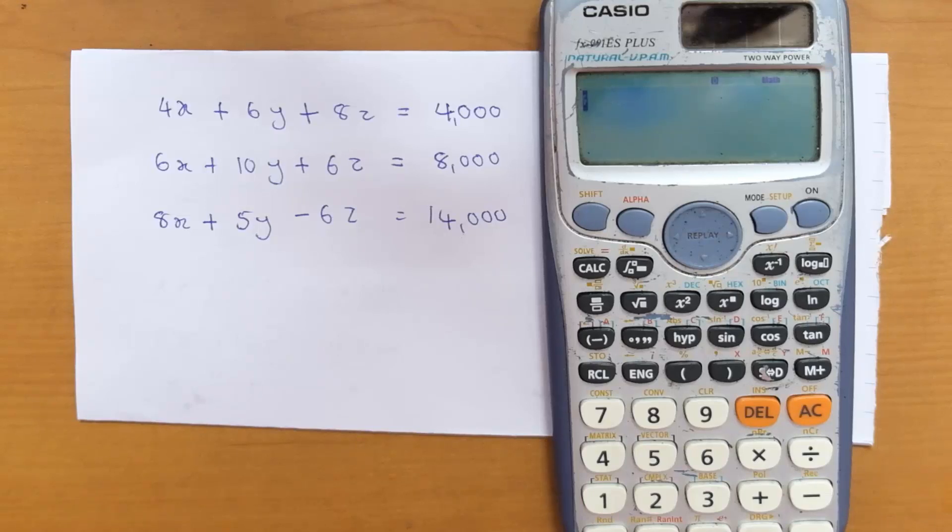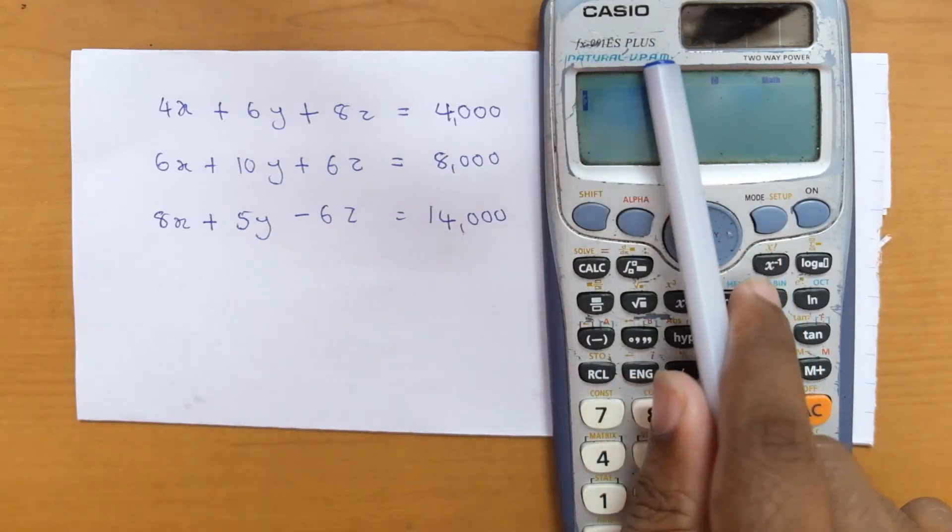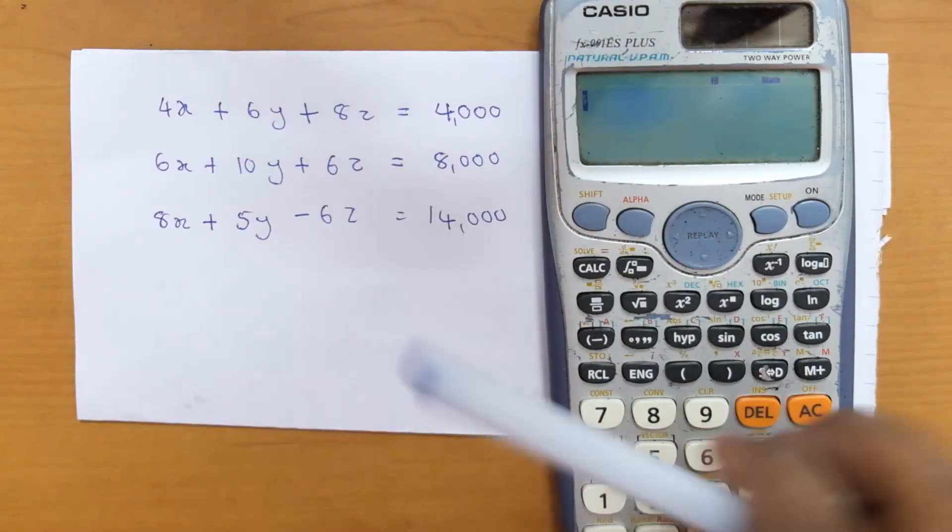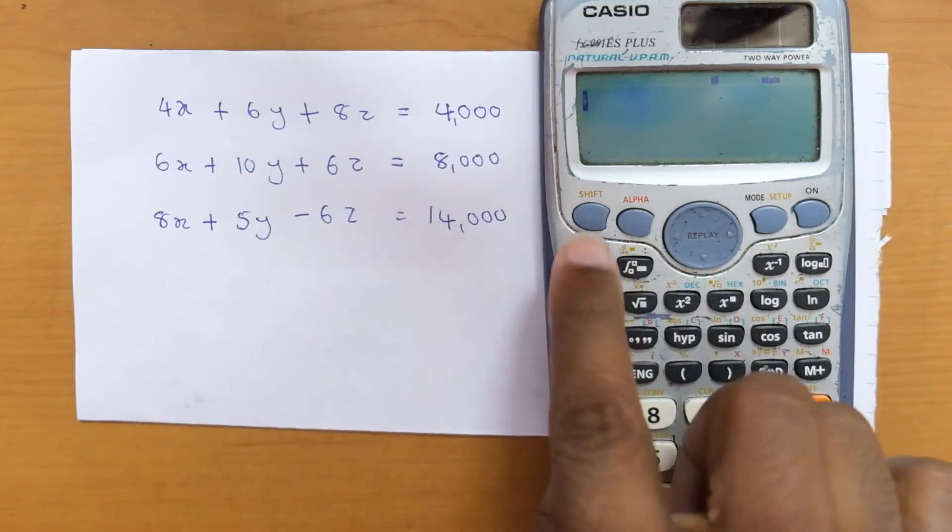Let's see how to do a three-variable linear equation calculation using the Casio fx-991ES Plus calculator. First, turn on the calculator, then clear the memory.